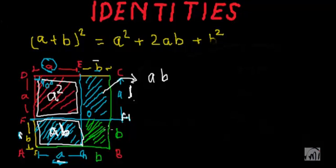Now, what is this tiny thing shaded in green? This is actually a square of side equal to B. So, what will be the area of this green square? It will be B².